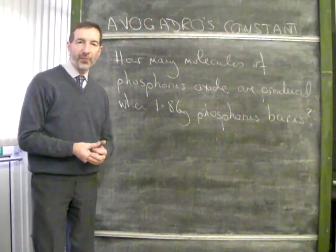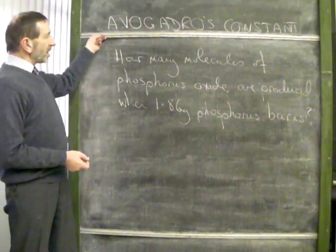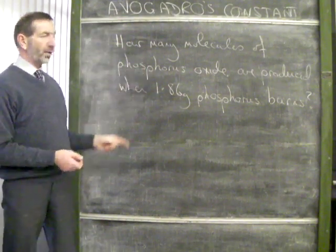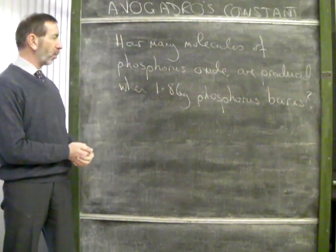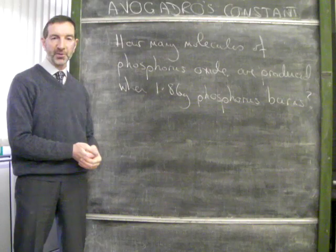Here's a variation on Avogadro. The question asks, how many molecules of phosphorus oxide are produced when 1.86 grams of phosphorus burns?